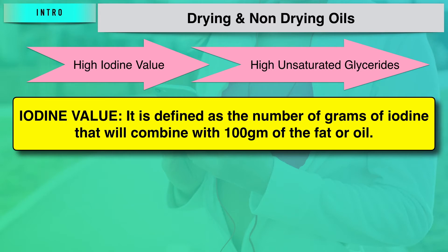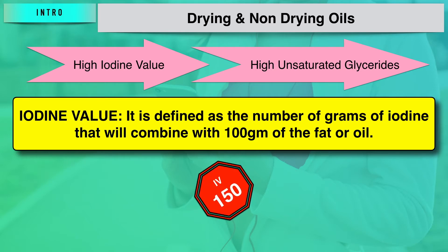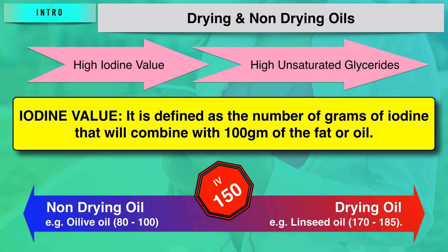Let us consider certain examples and their associated iodine values. It has been observed that drying oils have iodine values above 150. For example, linseed oil, which is a drying oil, has an iodine value in the range of 170 to 185. Non-drying oils have iodine values less than 100. For example, olive oil has an iodine value in the range of 80 to 100.